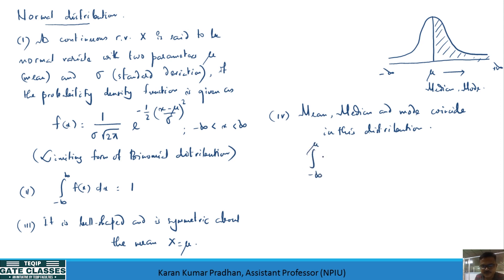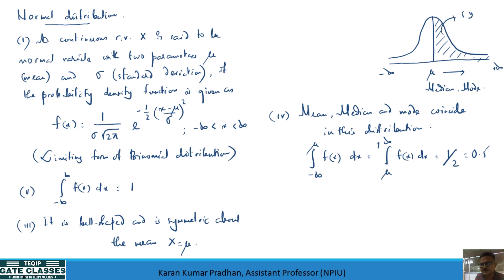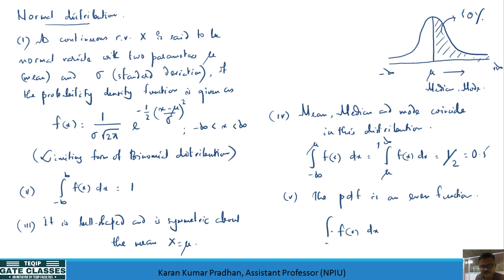Because the distribution is symmetric, integrating the PDF from negative infinity to mu gives the same result as integrating from mu to positive infinity, each covering 50% of the entire area. Since the PDF is an even function, rather than integrating from negative infinity to infinity, we can write it as two times the area from 0 to infinity.